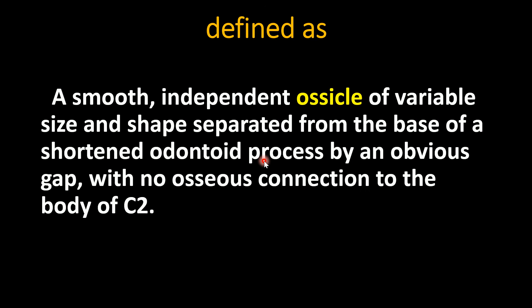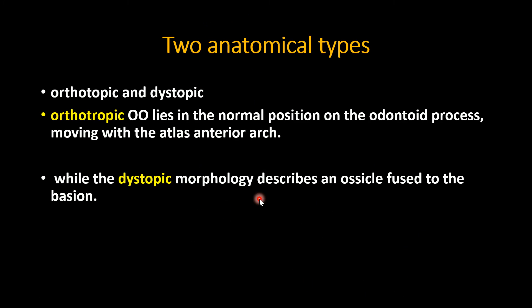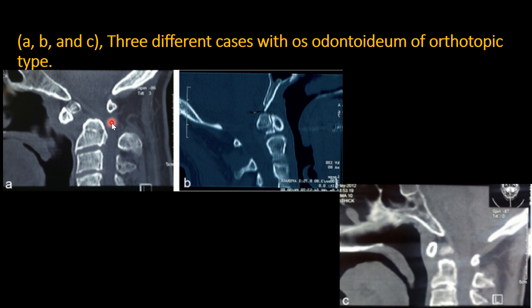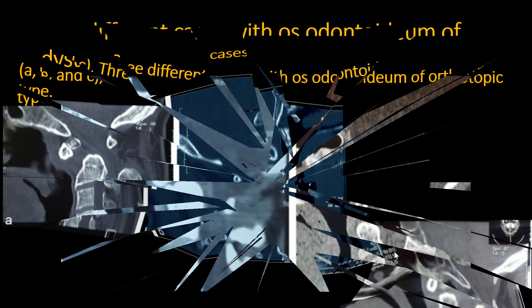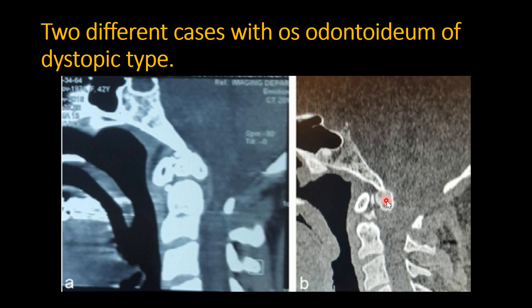The os odontoideum is defined as a smooth, independent ossicle of variable size and shape, separated from the base of a shortened odontoid process by an obvious gap with no osseous connection to the body of C2. There are two anatomical types: orthotopic, in which the os odontoideum lies in normal position in relation to the anterior arch of the atlas and moves with it; and dystopic, in which the ossicle is fused to the basion.